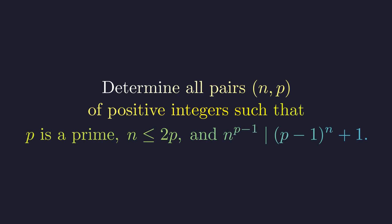We are tasked with finding all pairs of positive integers n and p that satisfy three conditions. First, p must be a prime number. Second, n cannot exceed 2 times p.